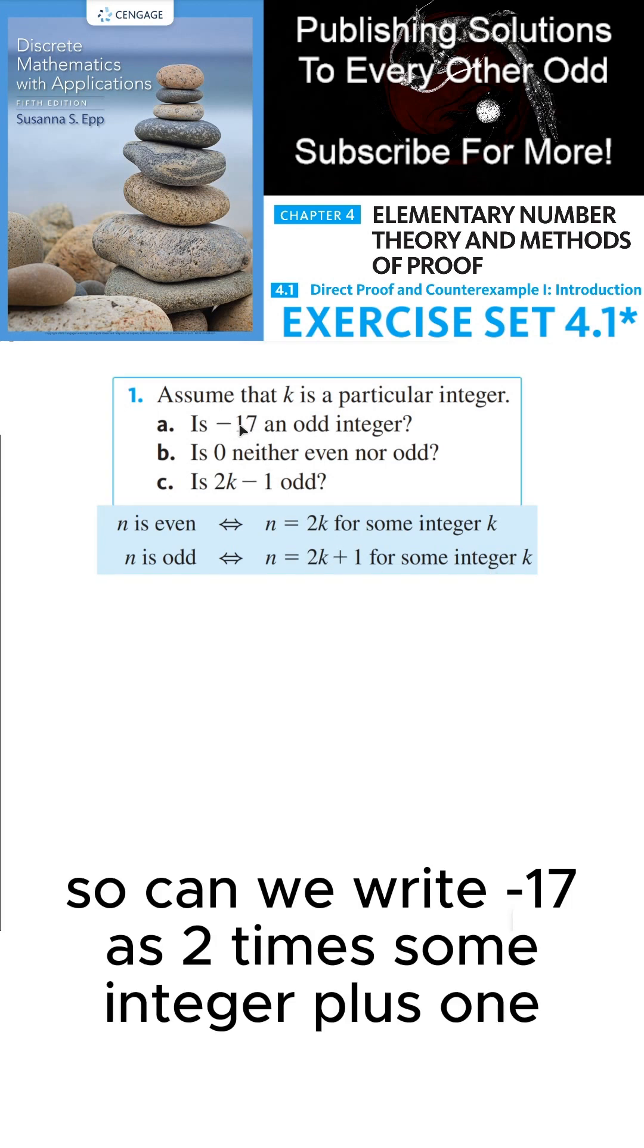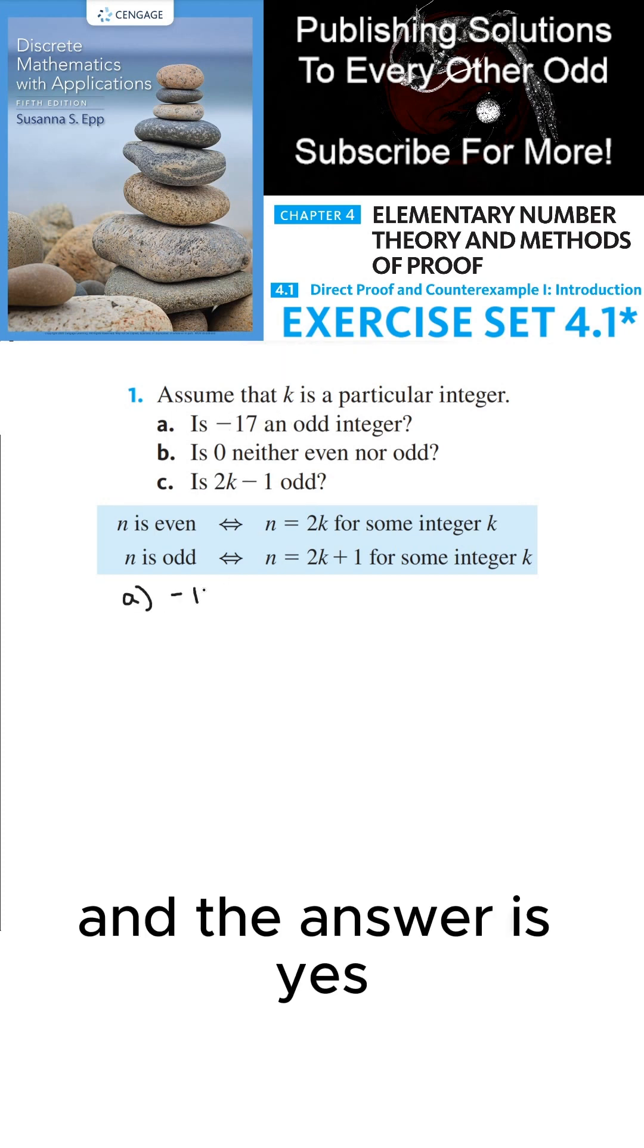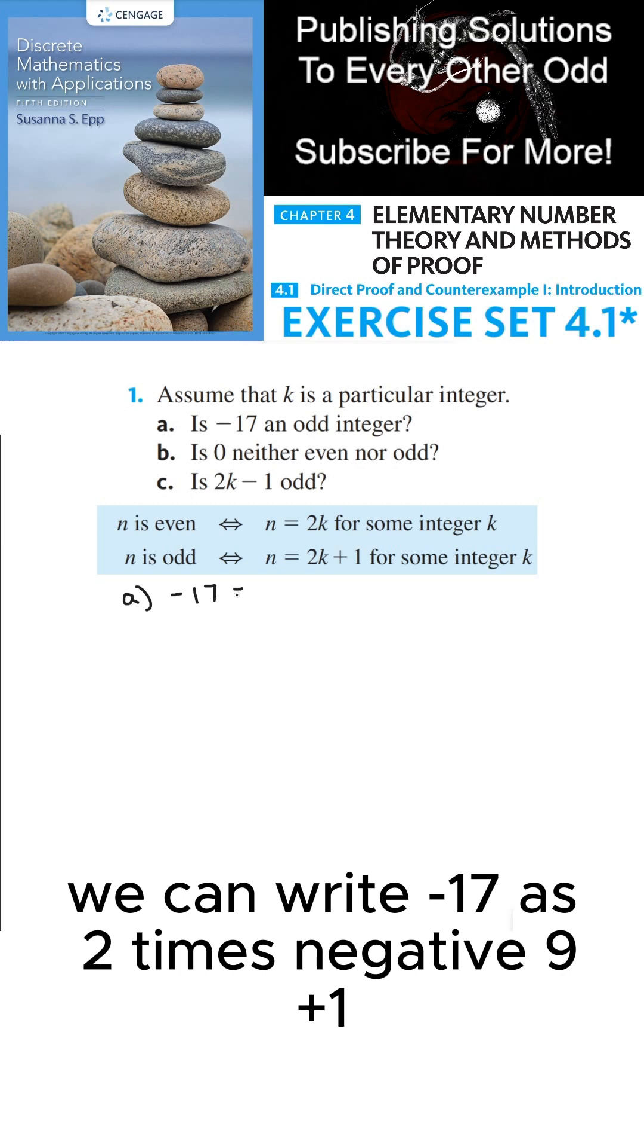So can we write negative 17 as 2 times some integer plus 1? And the answer is yes. We can write negative 17 as 2 times negative 9 plus 1.